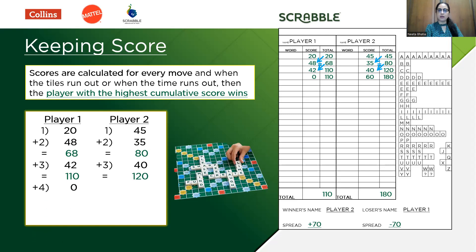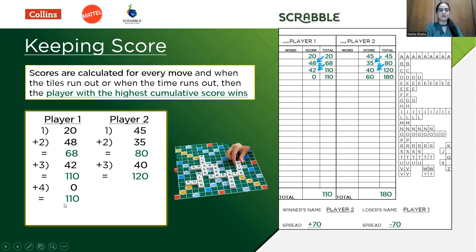Suppose in move 4, player 1 scores 0 points. There are two ways a player can score 0: either they played a phony word that was challenged off the board, or they exchanged tiles during that move — we'll explain these in our next video. If player 1 scores 0, you still write it down, and player 1 remains at 110 after move 4. Player 2, meanwhile, scores 60 points in that move, bringing their total to 180.